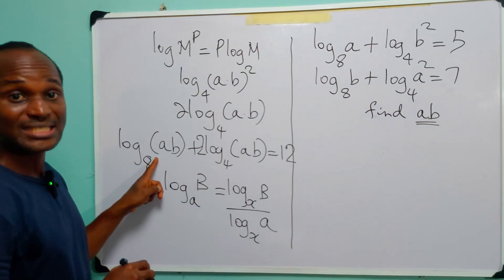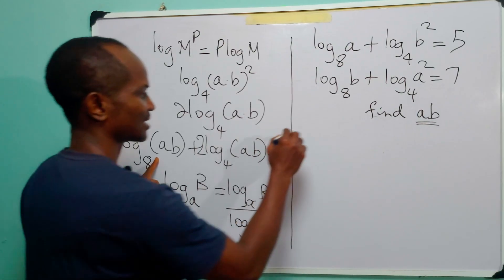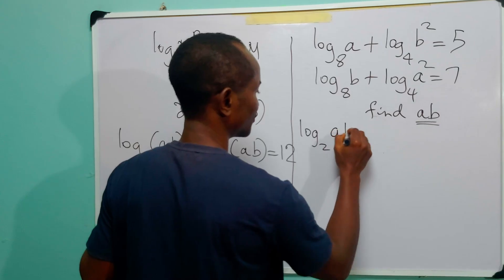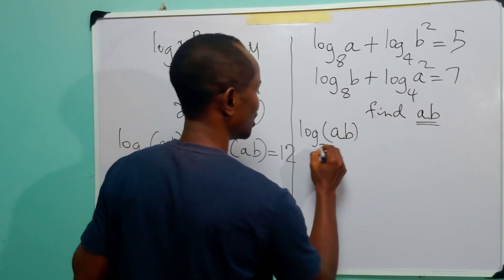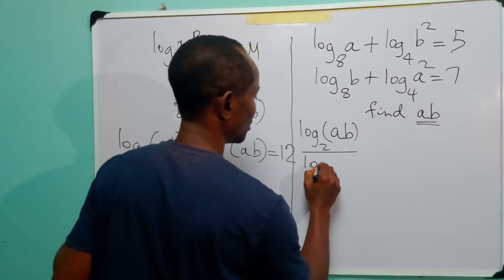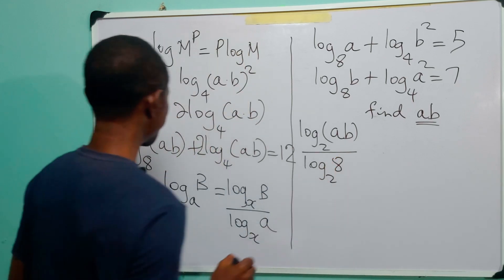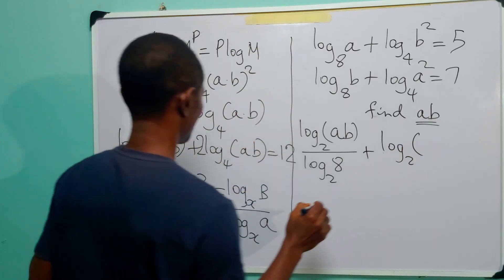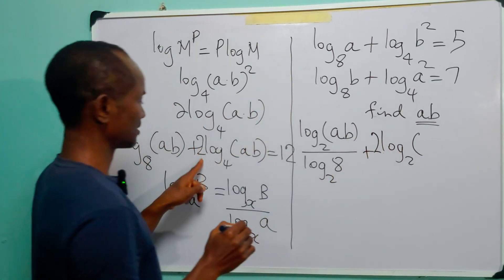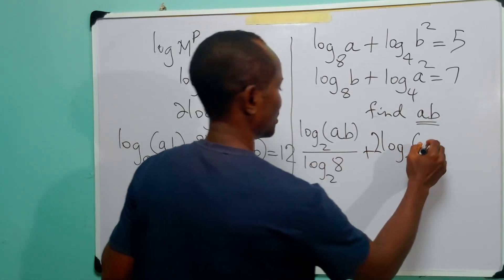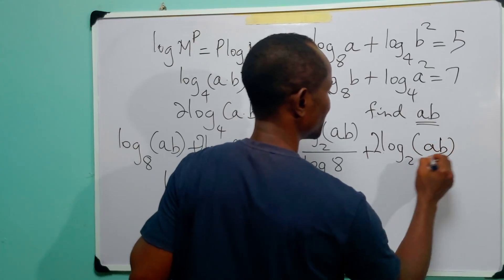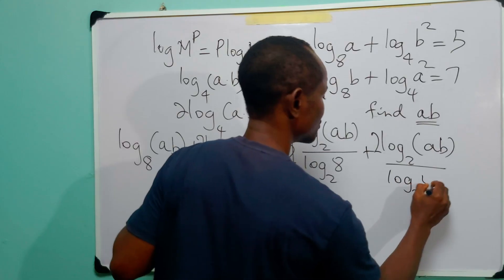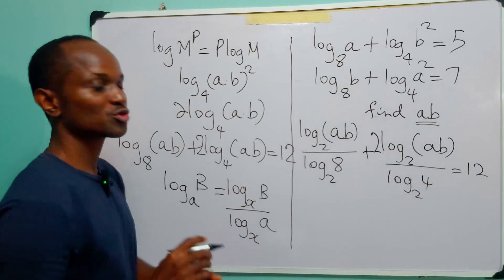Converting to base 2, we have log base 2 of ab divided by log base 2 of 8, plus 2 times log base 2 of ab divided by log base 2 of 4, is equal to 12.